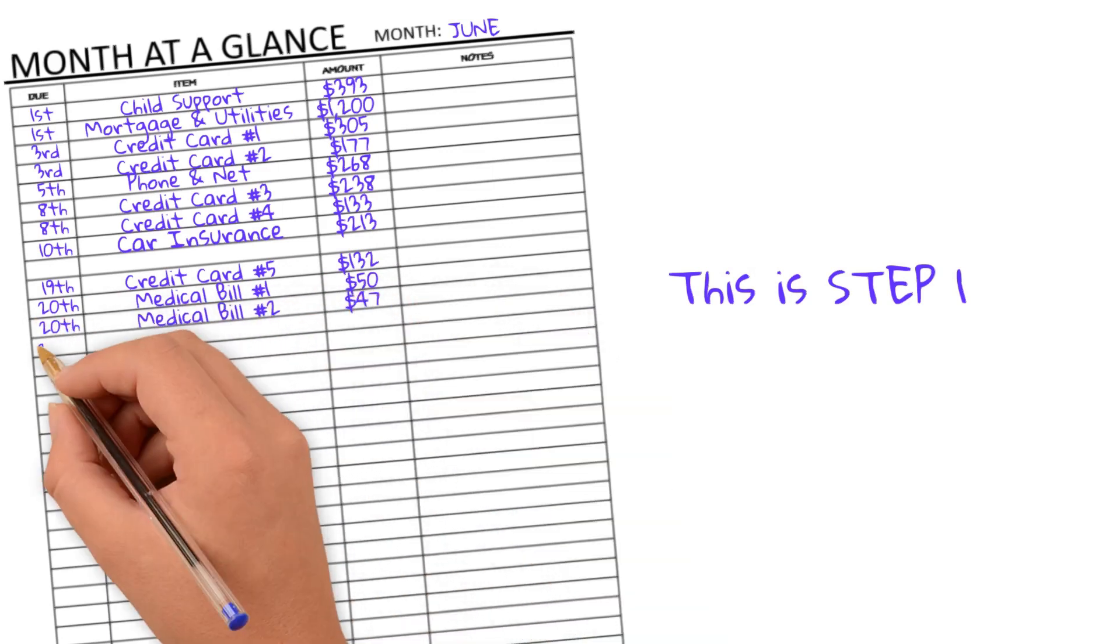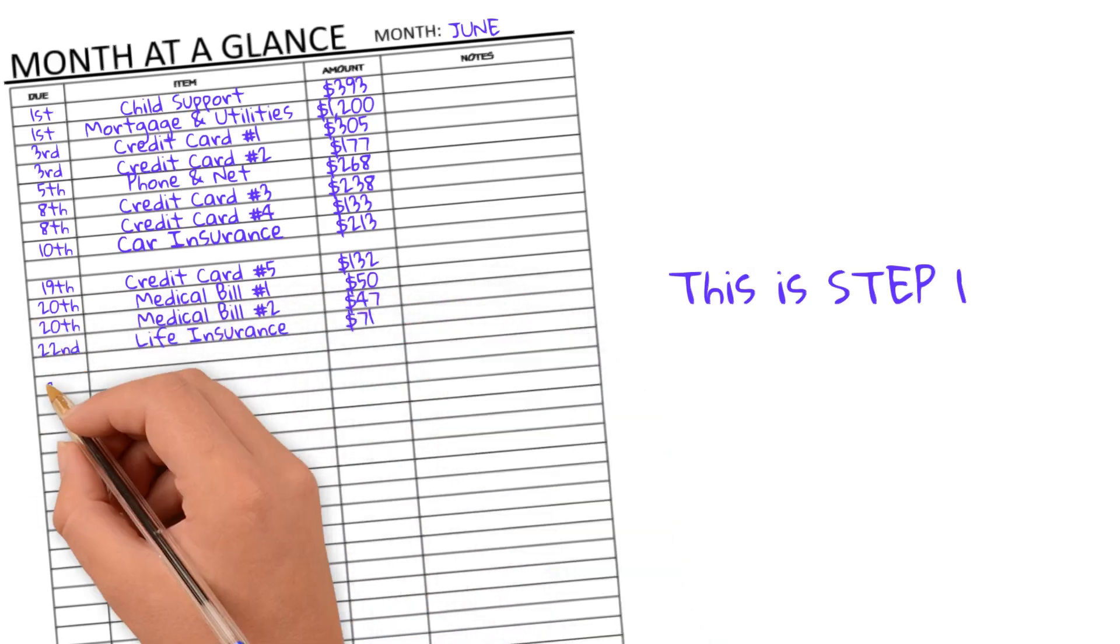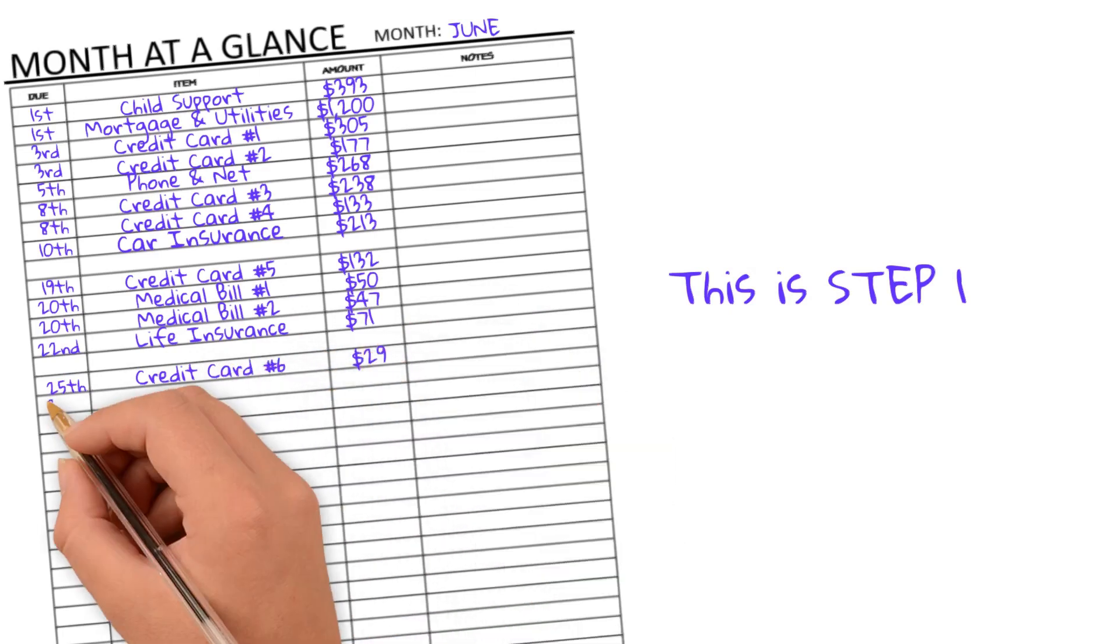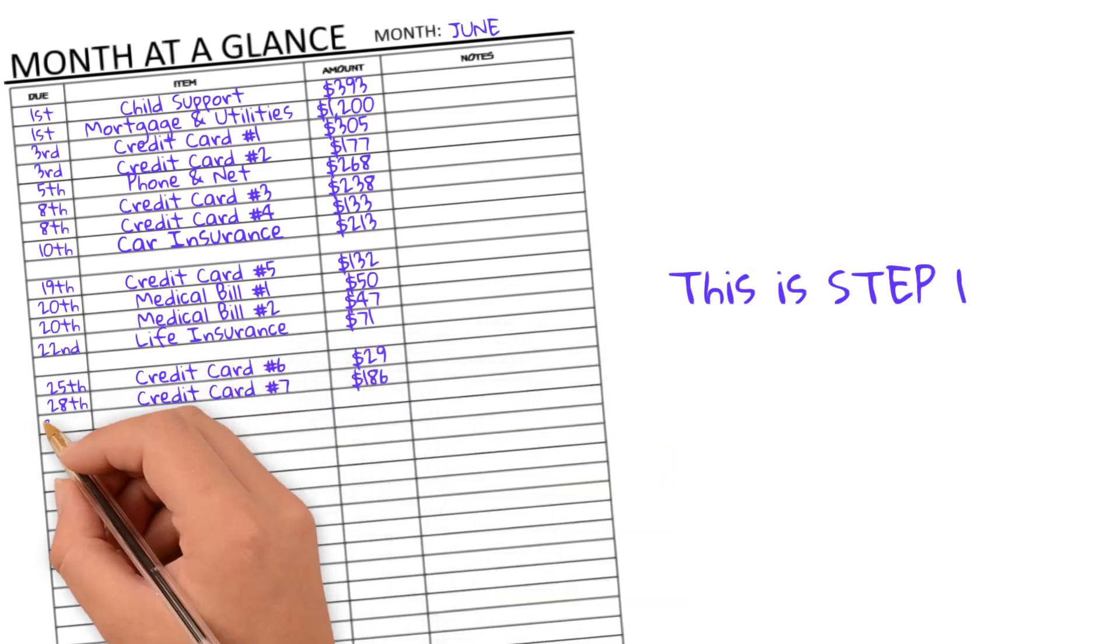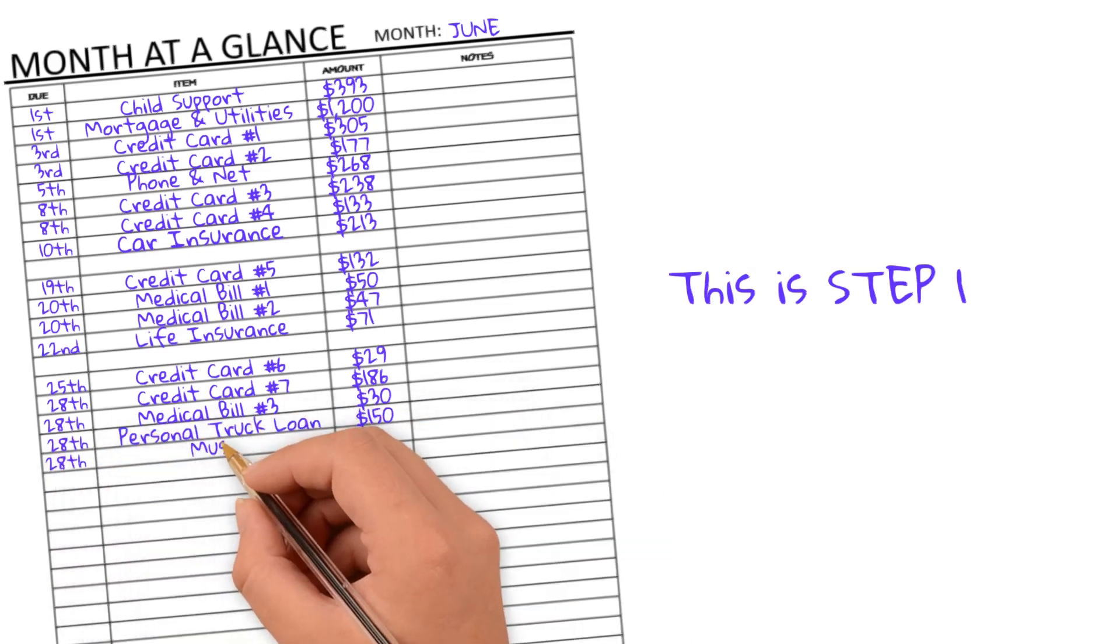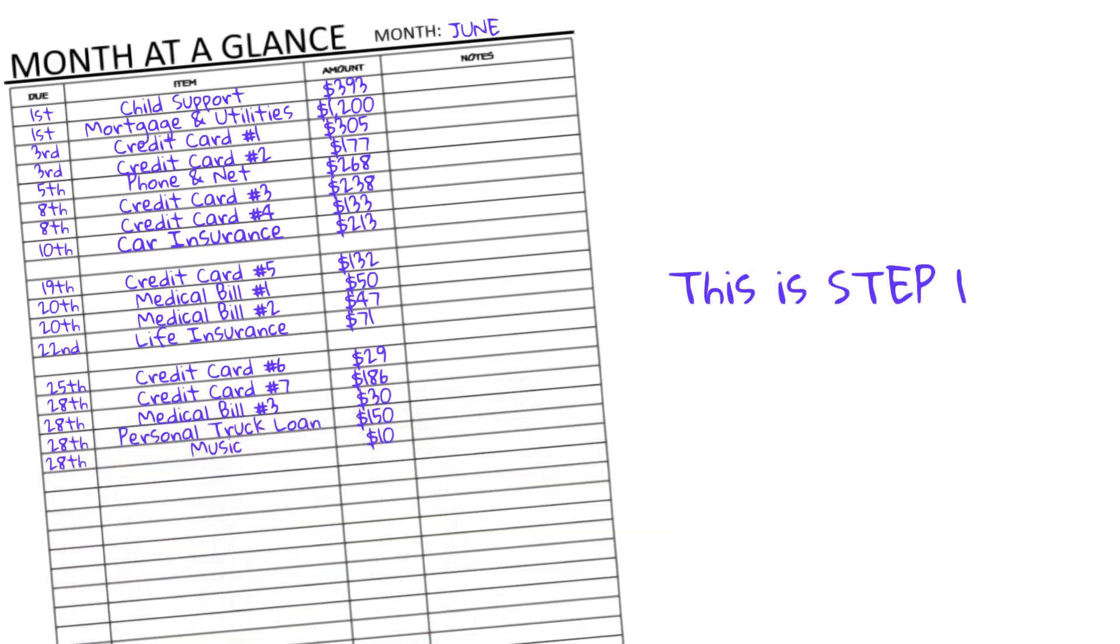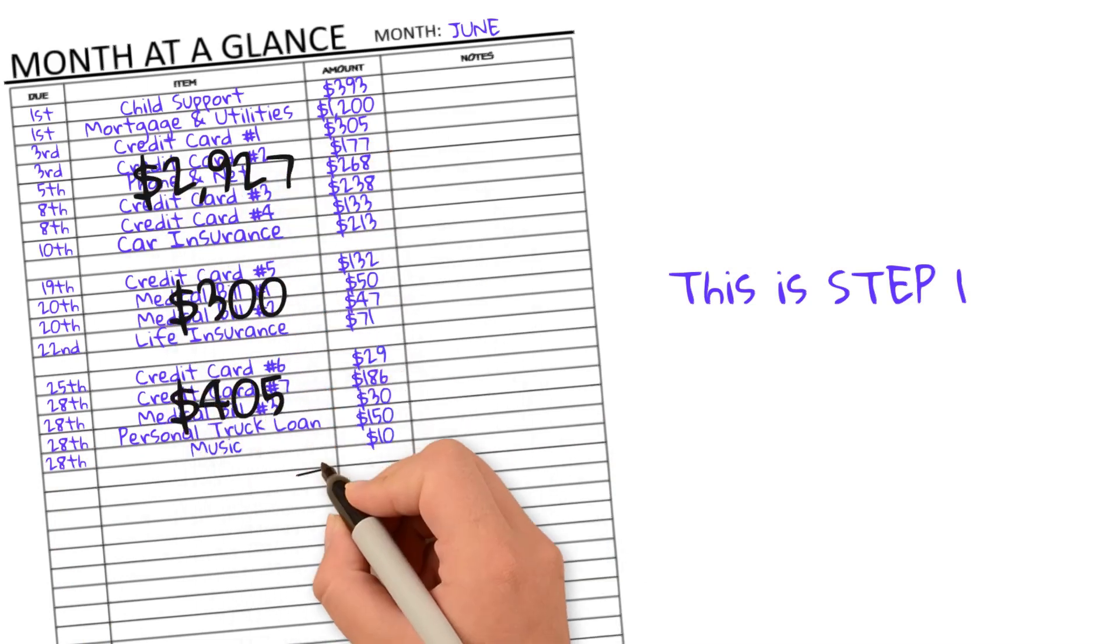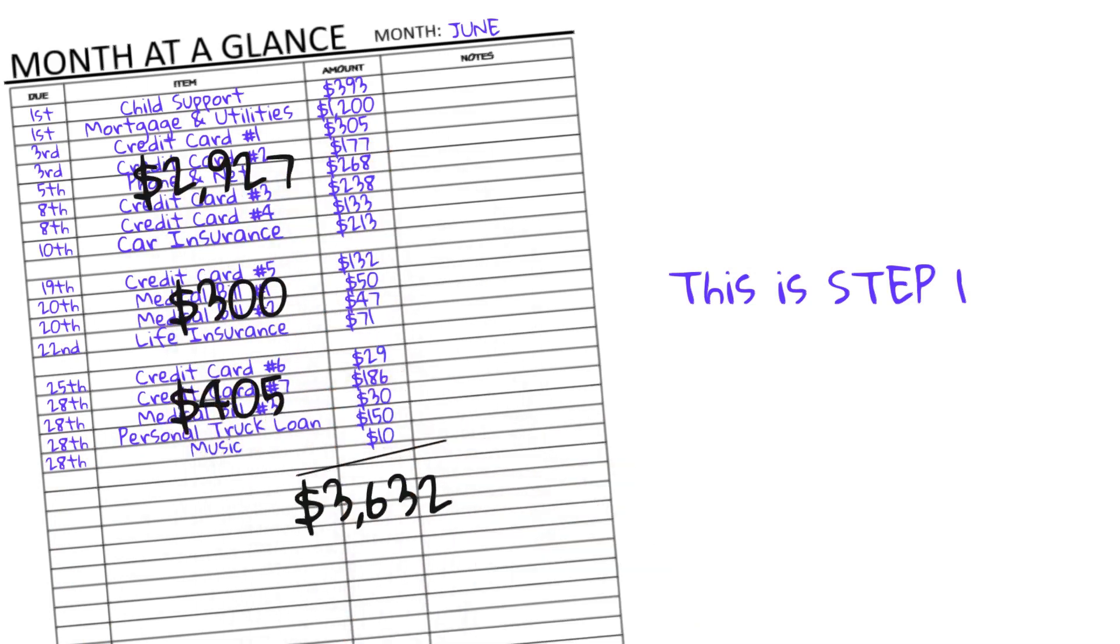Note this is just fixed expenses. It does not include groceries or fuel, our habits, hobbies, and miscellaneous. This is bare bones bills. So at a glance, I can tell we are pushing close to spending more than we're bringing in with this number. But I need to dive deeper to get my real numbers.